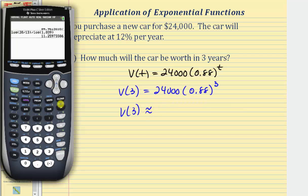So back to the calculator, we have 24,000 times 0.88 raised to the power of three, enter. So to the nearest dollar, we would say approximately $16,355.